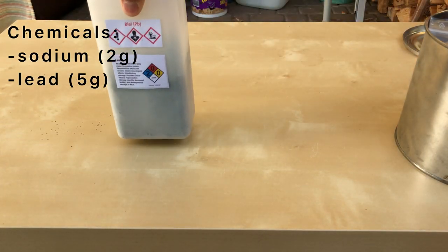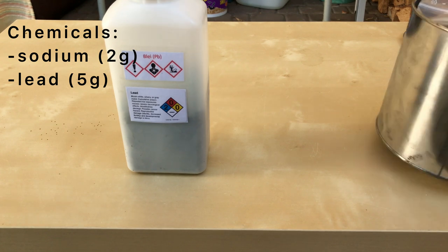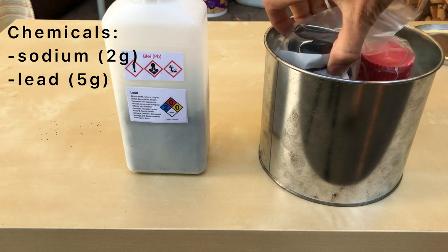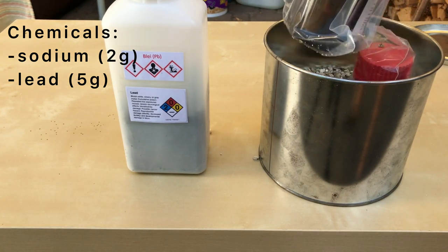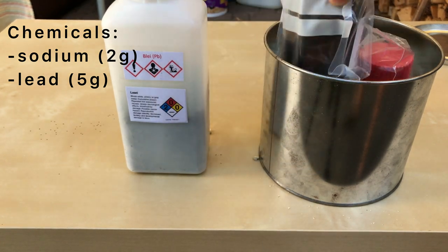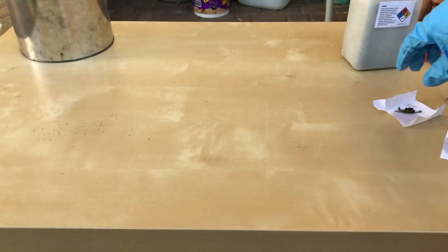Welcome back. Today we are going to make some lead sodium alloy. For this, 2 grams of sodium and 5 grams of lead are needed. Lead sodium alloy is useful for drying various solvents without being too violent.